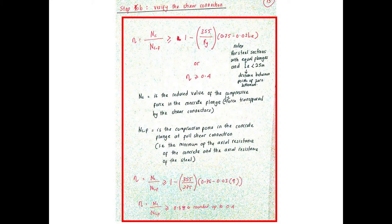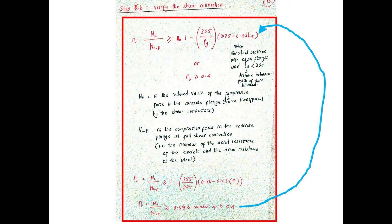Now that the design resistance of the shear connector PRD has been calculated, in this step we need to calculate the degree of shear connection that will be carried by the shear stud. Therefore, the condition highlighted in the red box must be satisfied, in which the ratio of the compressive force in the concrete flange NC over the compression force in the concrete flange at full shear connection NCF must be larger than 0.4.